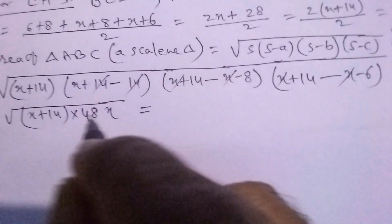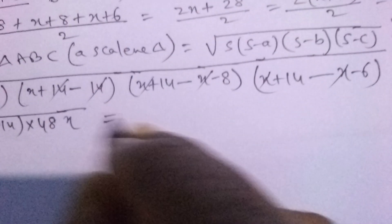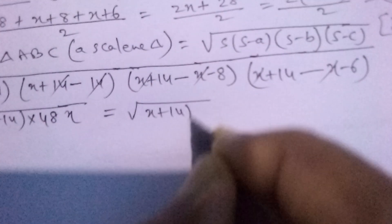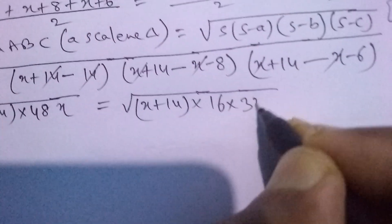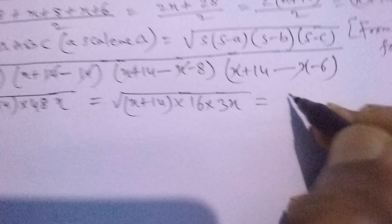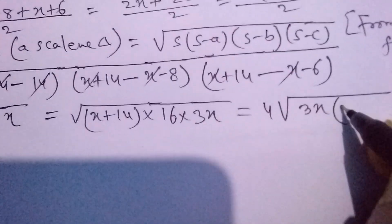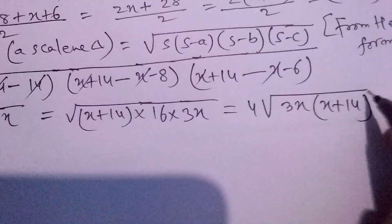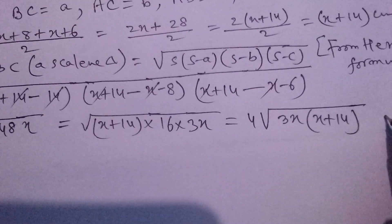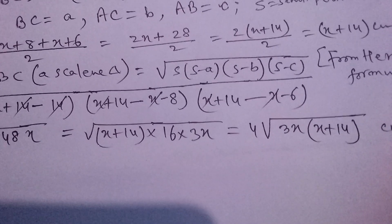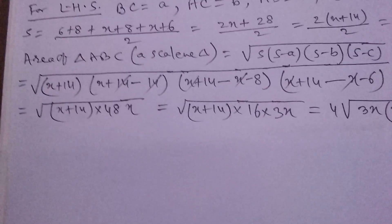This can be written as square root of (X+14)(16)(3X). Since 16's square root is 4, we get 4 times square root of 3X(X+14). This is LHS.